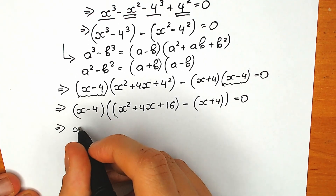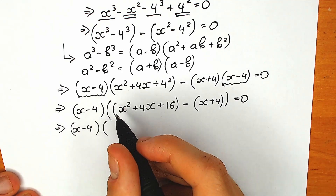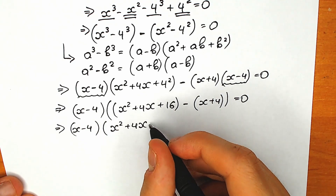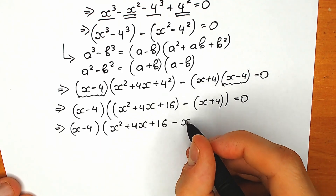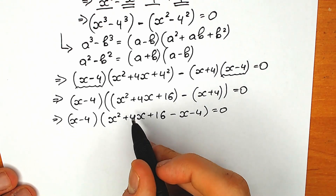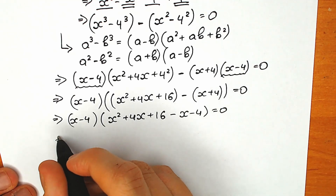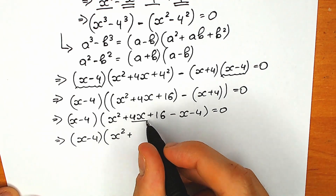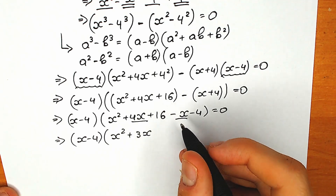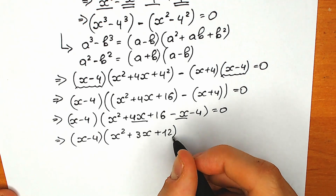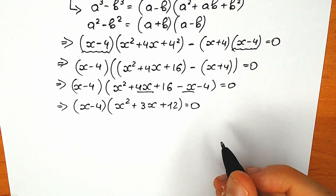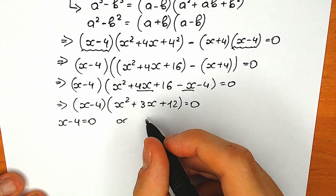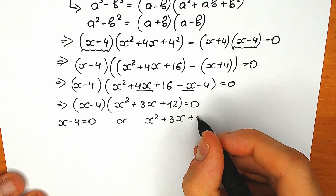Right now let's simplify a little bit. We have (x minus 4) and in the other parenthesis we can get rid of the inner brackets since we have all additions. So we have x-square plus 4x plus 16 minus x minus 4, opening the parenthesis gives minus x and minus 4, equal to zero. Combining like terms: 4x minus x equals 3x, and 16 minus 4 equals 12. So we get (x minus 4)(x-square plus 3x plus 12) equal to zero.